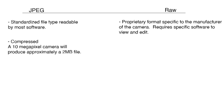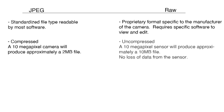JPEGs are compressed. Digital compression is a means of making files smaller by removing redundancies, much like zip files, but some loss of quality is the downside. In a JPEG, a 10 megapixel camera will produce approximately a 2 megabyte file. RAW files are uncompressed, so a 10 megapixel sensor will produce approximately a 10 megabyte file, with no loss of data from the sensor.